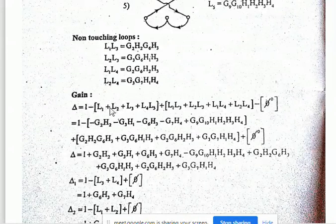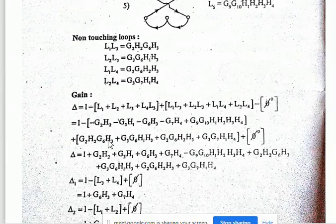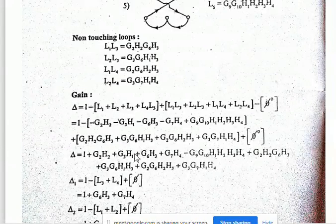Substituting the loop values: Delta = 1 − (L1 + L2 + L3 + L4 + L5). Since minus × minus = plus, we get 1 + G2·H2 + G3·H1 + G6·H3 and so on after simplification. We write all these and simplify.